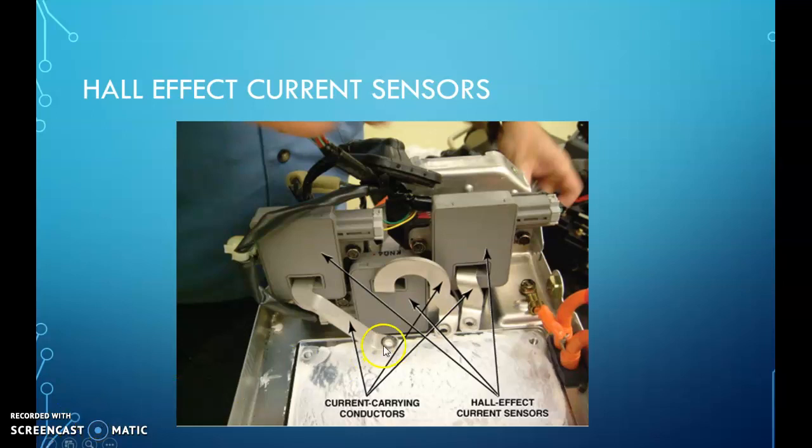Basically, it's monitoring current. Here's some Hall Effect current sensors. As current goes through the strapping, it's going to create a magnetic field around it. That gets picked up by these Hall Effect current sensors, so the computer can determine which direction the current is going, where, how much, etc.